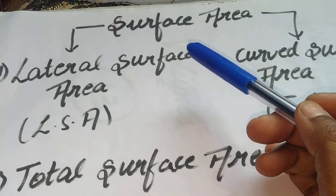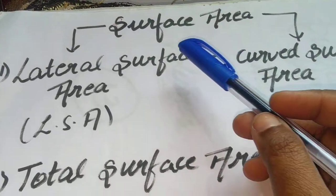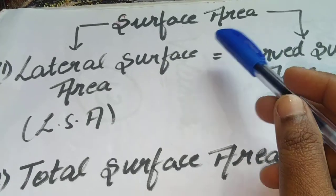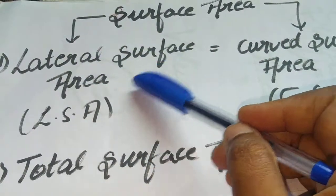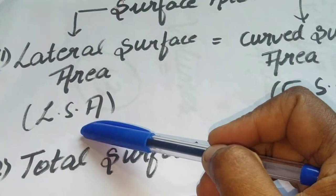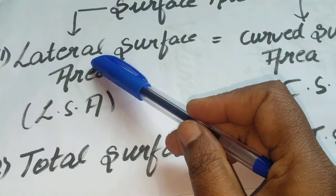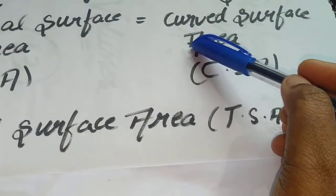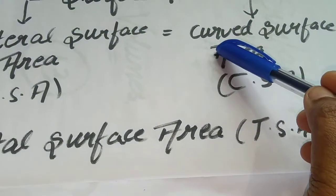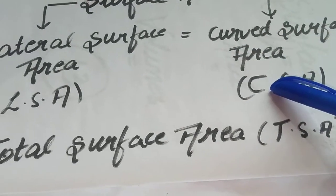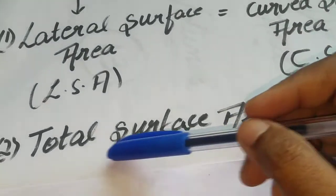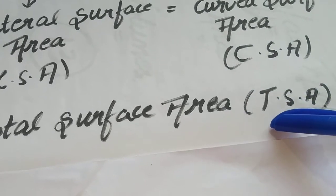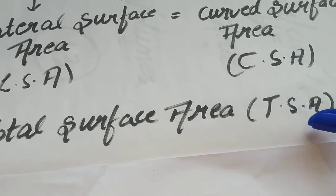Now let us learn what is meant by surface area. There are two types: lateral surface area (LSA) and curved surface area (CSA). I will explain when we should consider LSA and when we should consider CSA. CSA is nothing but curved surface area, and the next one is total surface area, which we write as TSA.